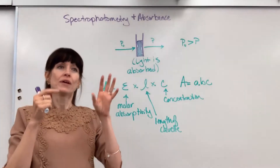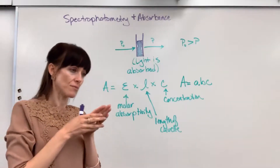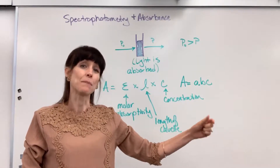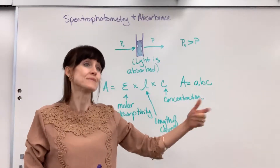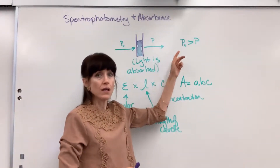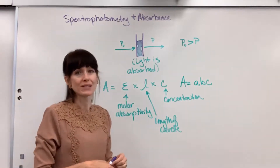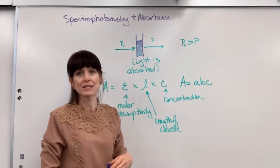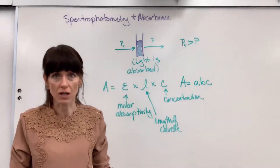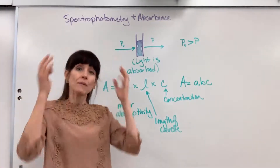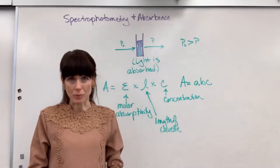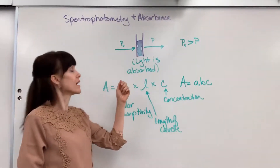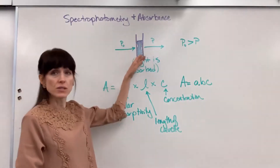In spectrophotometry, the machine knows exactly the amount of light that it shoots through and it can detect the amount of light that comes out on the other side. We call that transmittance, and you can do the log of a fraction of this, which is transmittance. We sum this all up in one word: absorbance — the amount of light that is absorbed by that solution.